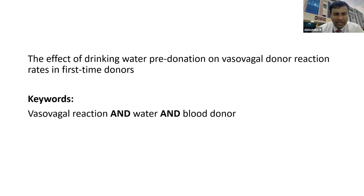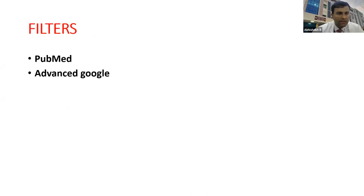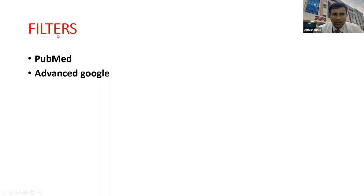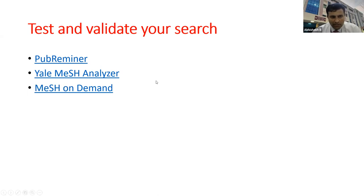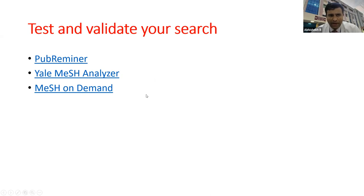To refine your search: replace general terms with more specific ones, add or combine terms with connector words. For example: 'vasovagal reaction AND water AND blood donor.' Filters already demonstrated in PubMed apply here. Even Google search has similar advanced filters — just click 'Advanced Google' below the search bar. To validate your search, use websites like PubReminer, Yale MeSH Analyzer, or MeSH on Demand to verify you're picking up all requisite articles and not missing anything.